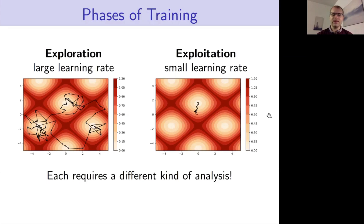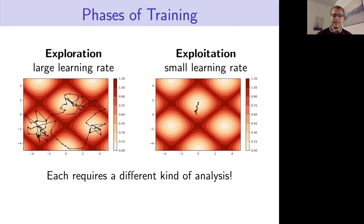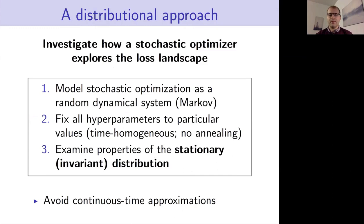Both of these phases require a different kind of analysis because the behavior is so different. We think the exploitation phase is very well covered by classical convex optimization theory. However, the exploration phase is still really unknown in terms of how it operates — it's still uncertain what particular attributes give a stochastic optimizer the ability to explore well. This is unfortunate because we know the exploration phase is especially critical in deep learning, where we have non-convex objectives, and it has a major impact on generalization performance.